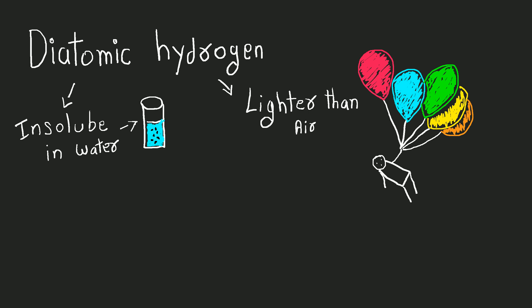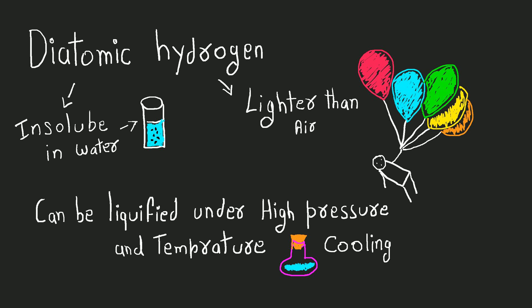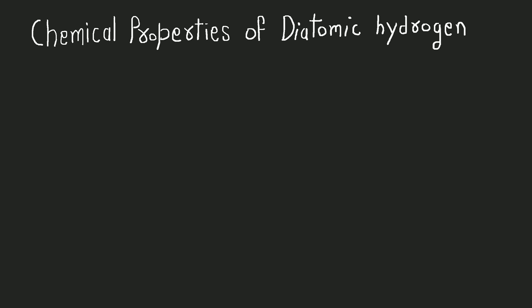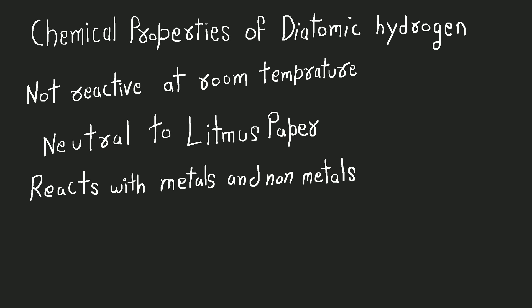It is lighter than air, almost insoluble in water, and can be liquefied under high pressure and temperature by cooling. Chemical properties of diatomic hydrogen are: it is not reactive at room temperature, for example 30 degrees Celsius, neutral to litmus paper, and reacts with metals and non-metals.